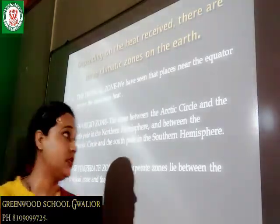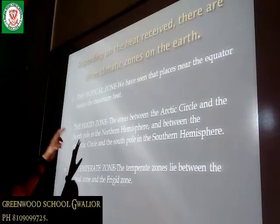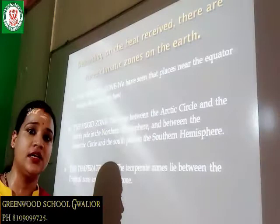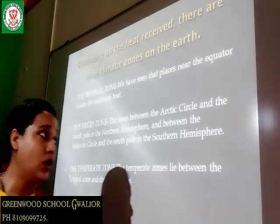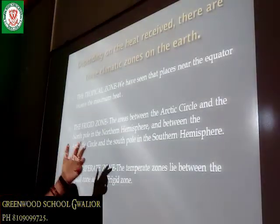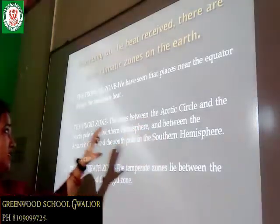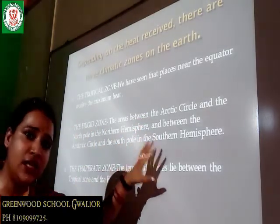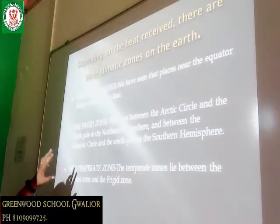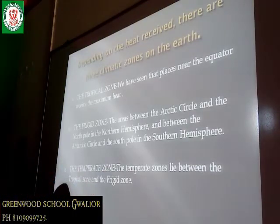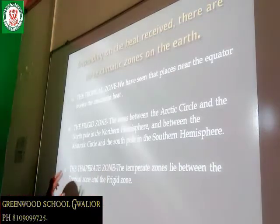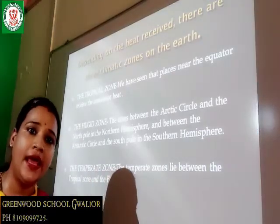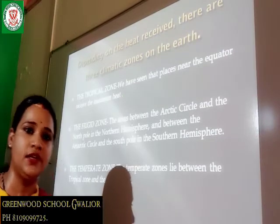The word torrid means heat. The frigid zone covers the areas between the Arctic Circle and the North Pole in the Northern Hemisphere, and between the Antarctic Circle and the South Pole in the Southern Hemisphere. The temperate zone lies between the tropical zone and the frigid zone, and this zone has mild temperature.